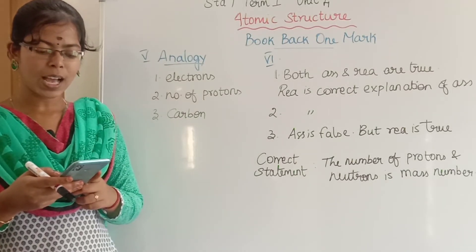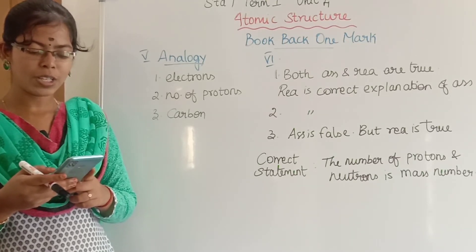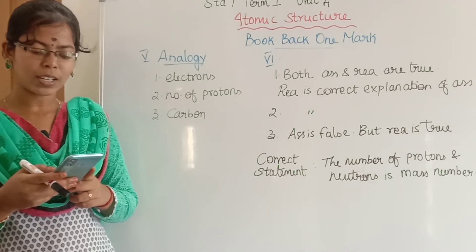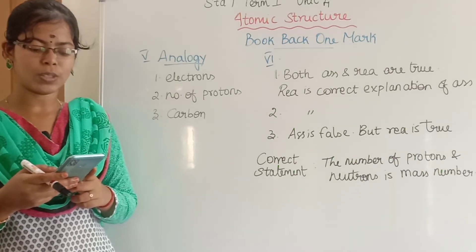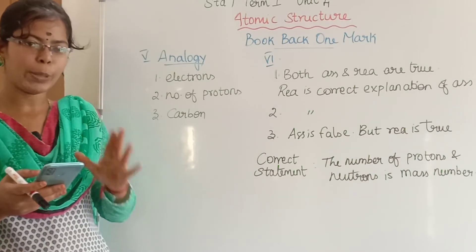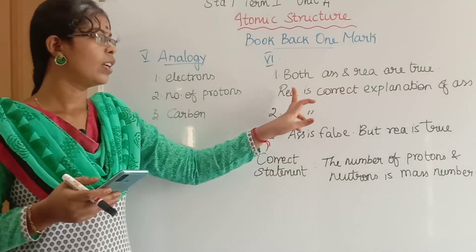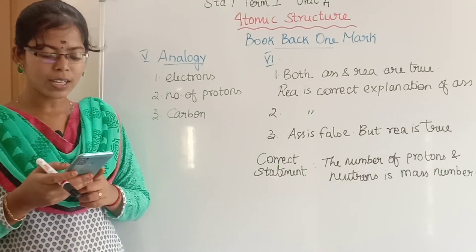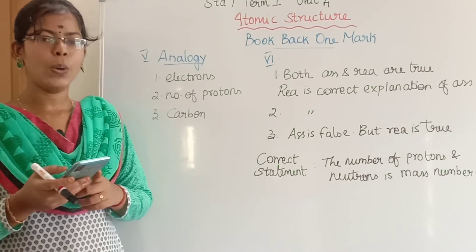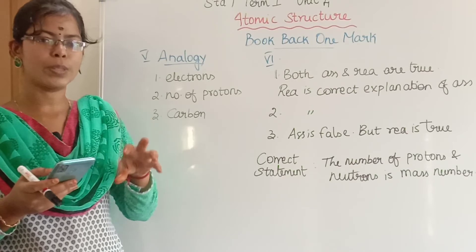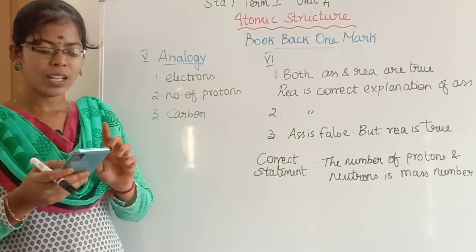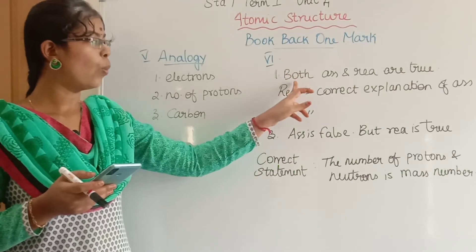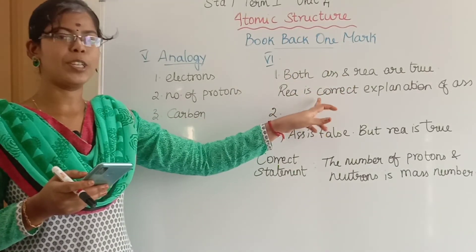Sixth section: consider the following statements and choose the correct option. First assertion: an atom is electrically neutral. Reason: atoms have equal number of protons and electrons. Both assertion and reason are true, and the reason is the correct explanation of the assertion. Second assertion: the mass of an atom is the mass of its nucleus — true statement. Reason: the nucleus is at the center — true. Both assertion and reason are true, and the reason is the correct explanation of the assertion.